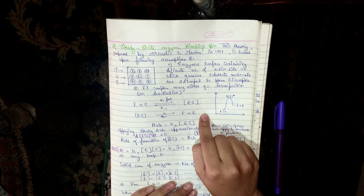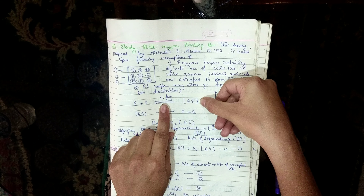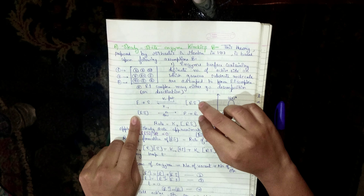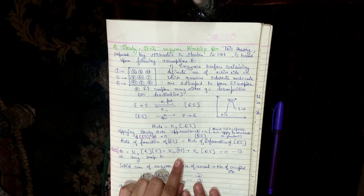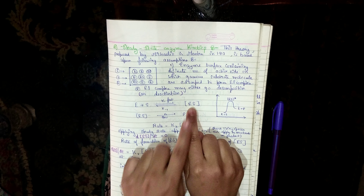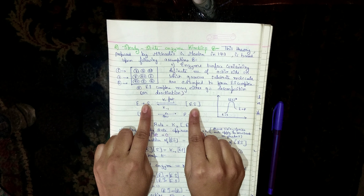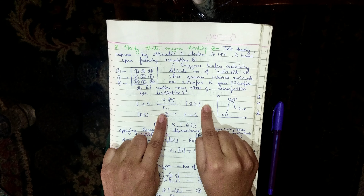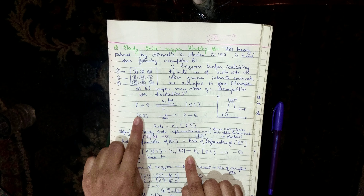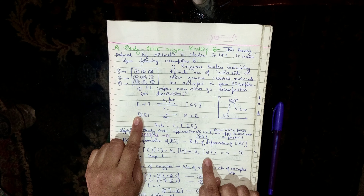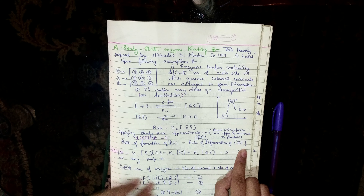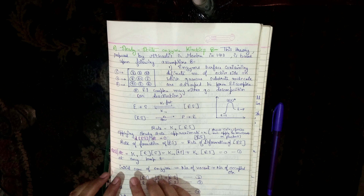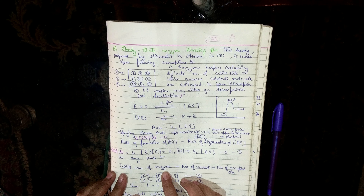The rate of decomposition: the enzyme-substrate complex breaks down in both equations — in the reversible reaction (k-1) and also in the forward step (k2). So decomposition = k-1[ES] + k2[ES]. We call this equation number 1.